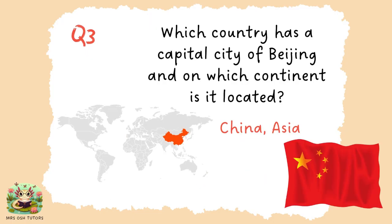Question three. Beijing is the capital city of China — and it's found in Asia. You may not know this, but ice cream and toilet paper were first invented in China.